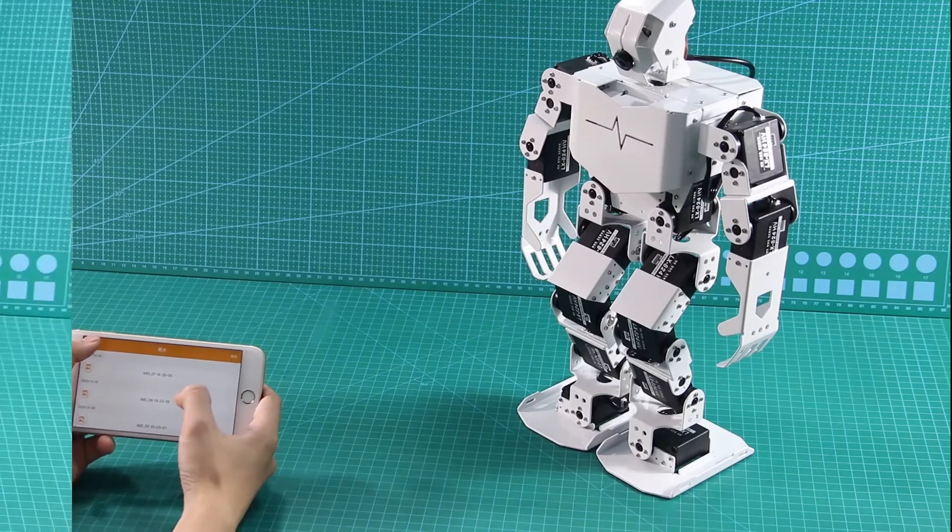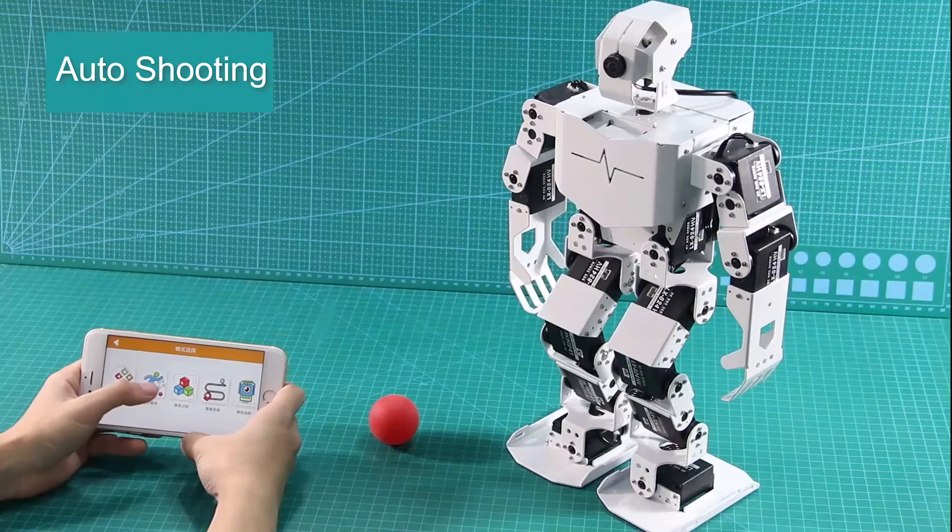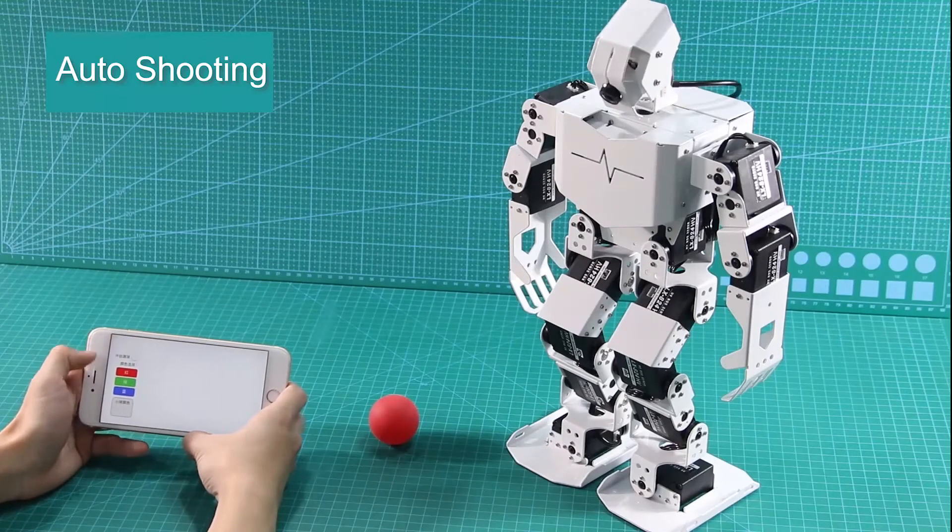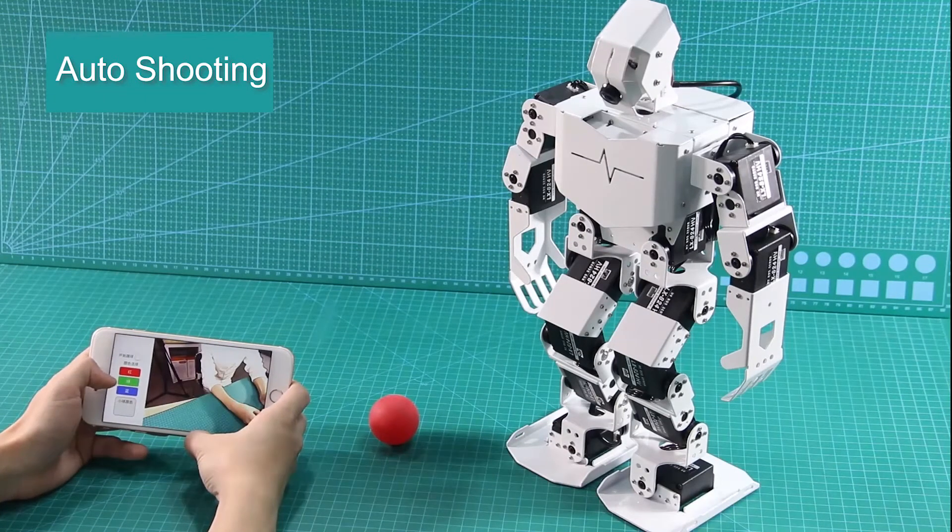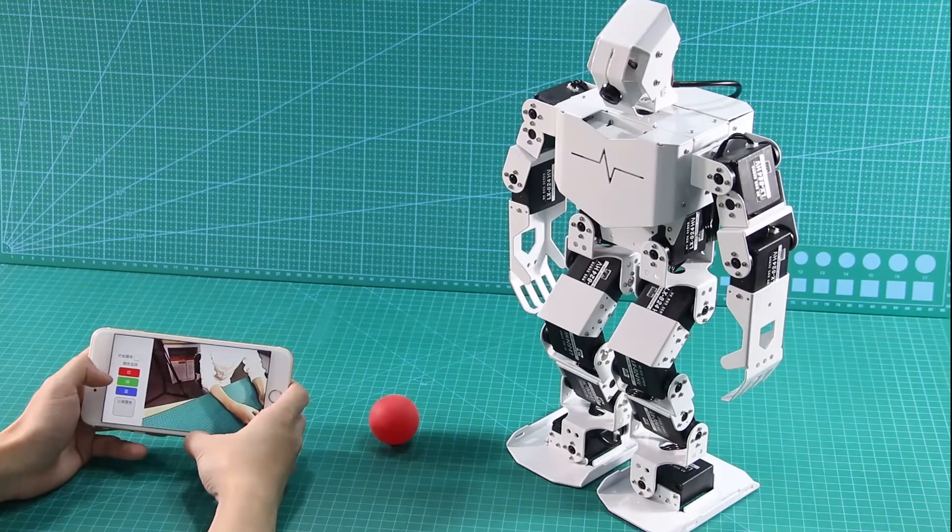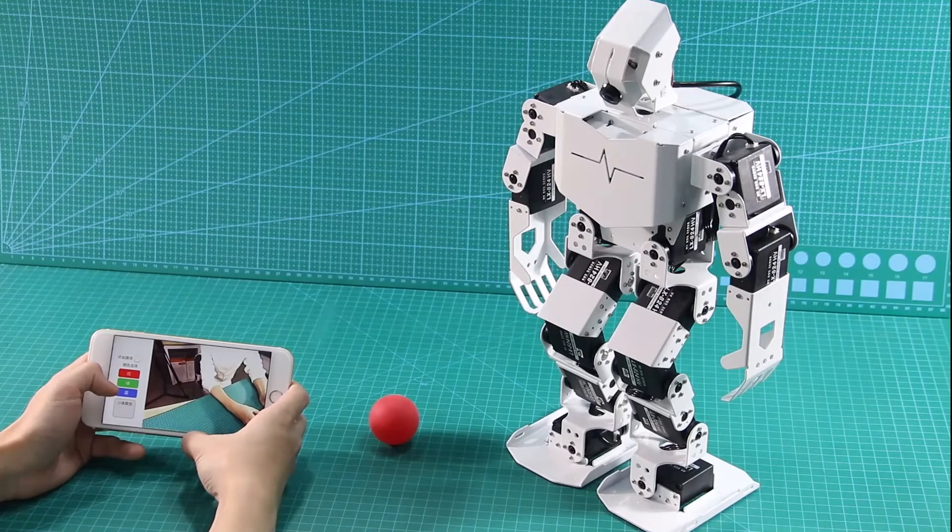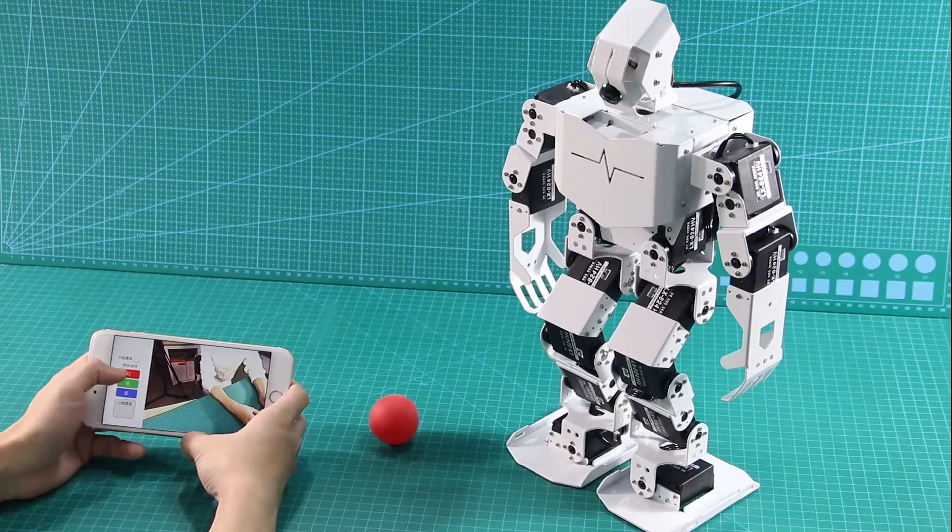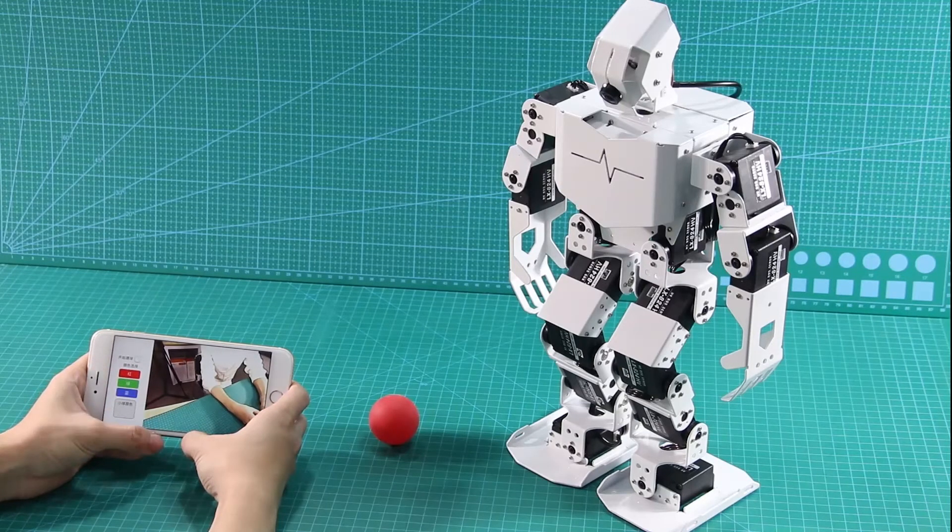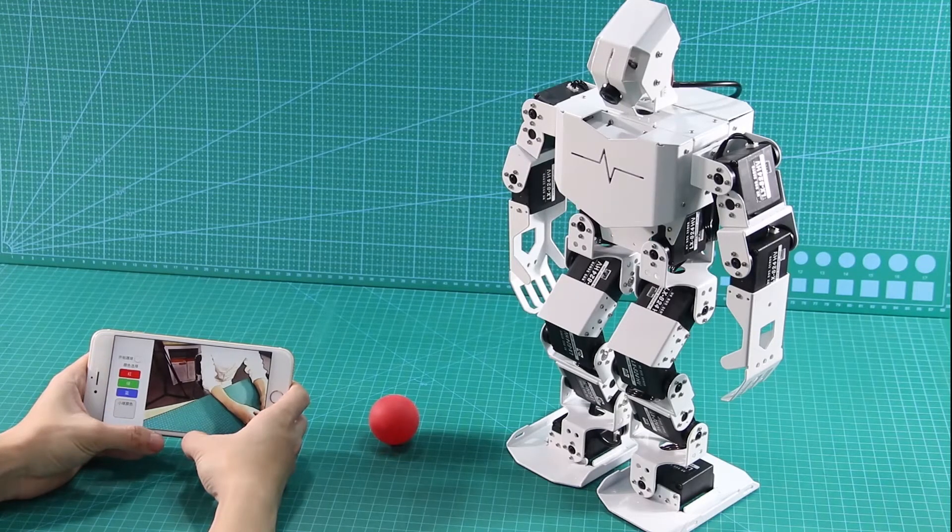Let's look at Auto Shooting. Click Auto Shooting to see three building colors: red, green, and blue on the left side. We select a specific color first. When TonyPi recognizes the target color, it will kick the corresponding ball.